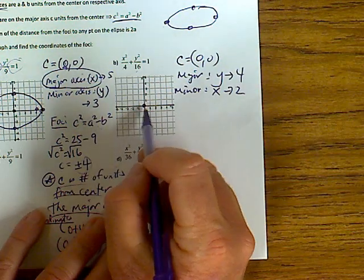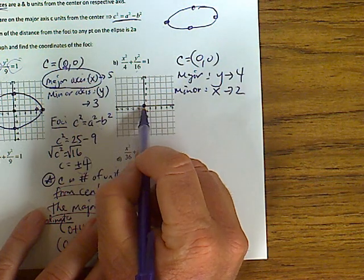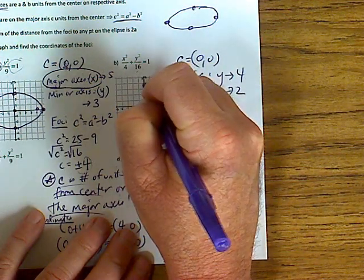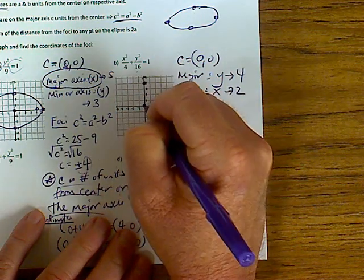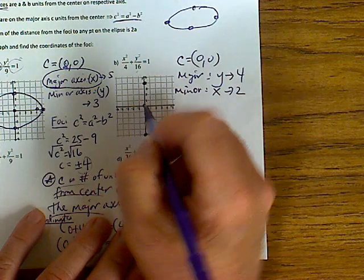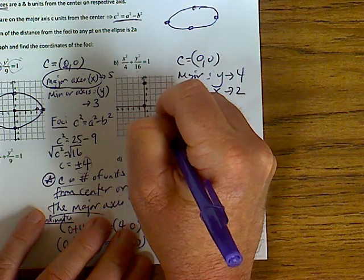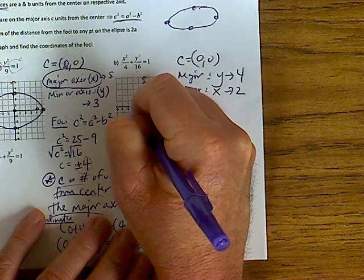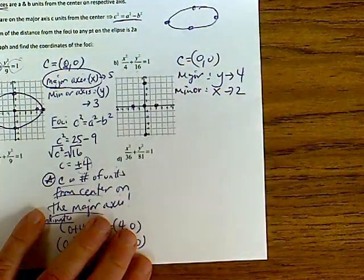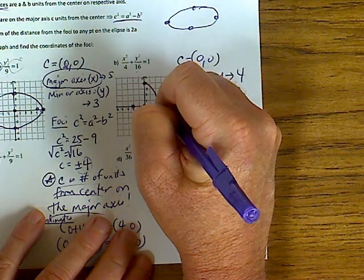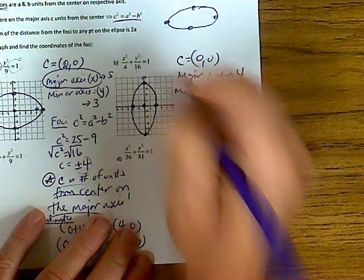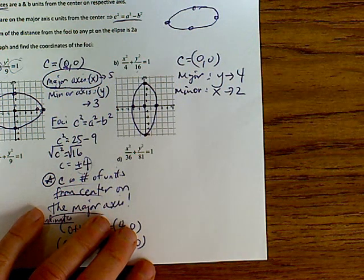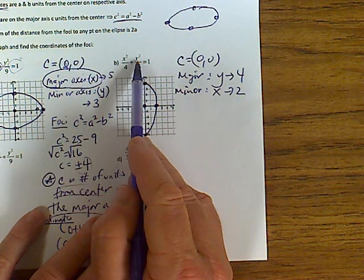The graphing is pretty simple — it's finding the coordinates of the foci that's the hardest part. So (0, 0) is your center. Go four in the y direction — up four, down four. In the minor axis x-direction, go two units out, two units back — sketch in your graph and you've got it.